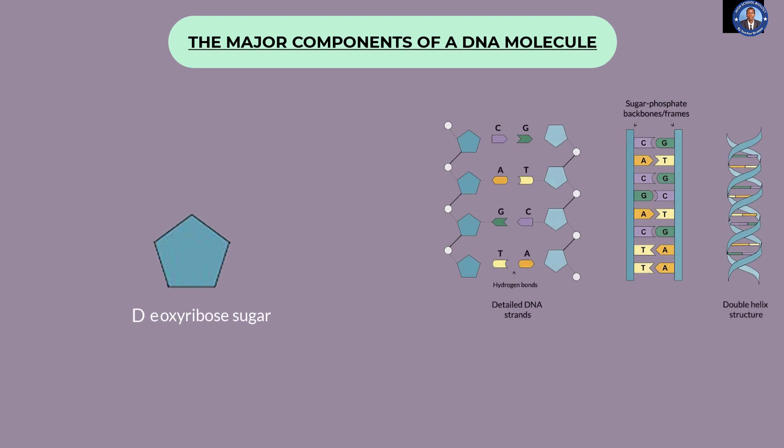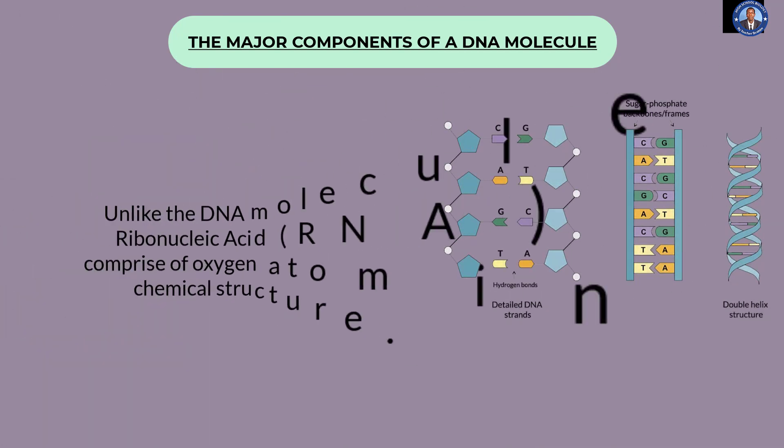On the other hand, the ribonucleic acid, that is the RNA, comprise of a ribose sugar. Hence the term ribonucleic acid. And that is just one of the differences between the DNA and RNA. The DNA do not comprise of oxygen atom in its chemical structure, while RNA comprise of oxygen atom in its chemical structure.